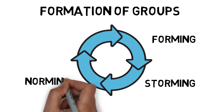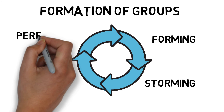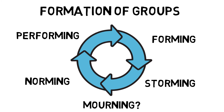Norming reflects the stage where cooperation replaces conflict and members agree on how to work together. And performing, in which there is total acceptance of roles and all members work towards the common goals as a well-functioning group. There is sometimes a fifth stage, mourning, which is when a group breaks up and goes their separate ways.